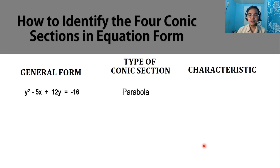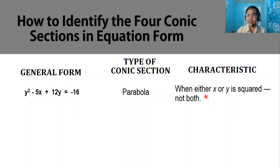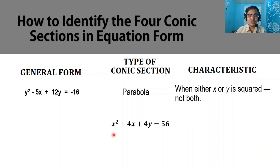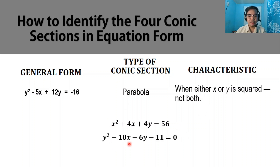For the parabola, consider y squared minus 5x plus 12y equals negative 16. The characteristic is when either x or y is squared, but not both. In this case, we have y squared only, so this general form is a parabola. We don't need to transform into standard form to determine the conic section. Another example: x squared plus 4x plus 4y equals 56 has only x squared, and y squared minus 10x minus 6y minus 11 equals 0 has only y squared — both are parabolas.